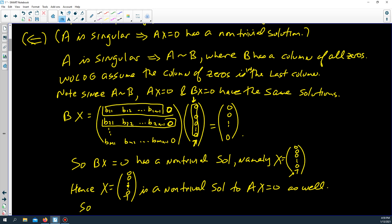So, Ax equals 0 has a, actually many, has a non-trivial solution. And that's what I wanted to show. Ax equals 0 has a non-trivial solution.